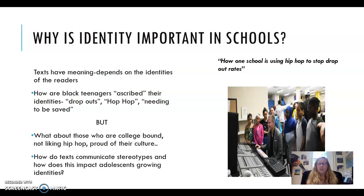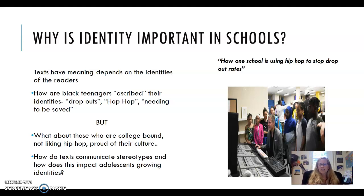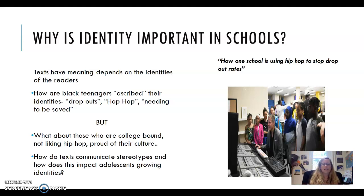Why is it important for you to be thinking about identities? The article started with a really good example. It was an inner city school where researchers were present, and there was a newspaper article basically saying how one school is using hip-hop to stop dropout rates. They really pointed out that texts have meanings and the meaning of a text depends on the identities of the readers. If you read this article, you might think that black teenagers are ascribed an identity — that they are dropouts, or they all like hip-hop, or they all need to be saved.